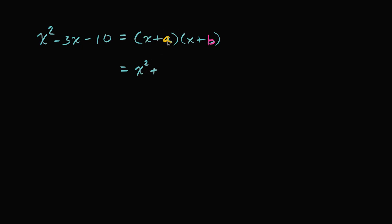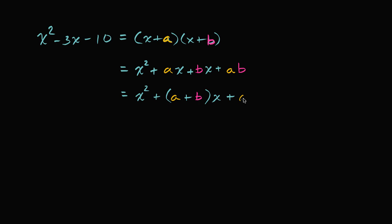So we have x times x to get x squared, then a times x to get ax, then x times b to get bx — we're multiplying each term times every other term. And then finally we have a times b, which is ab. Now we can simplify this. This would be x squared plus, we can add the two coefficients on the first degree terms: ax plus bx gives us (a plus b)x, and then finally plus ab.